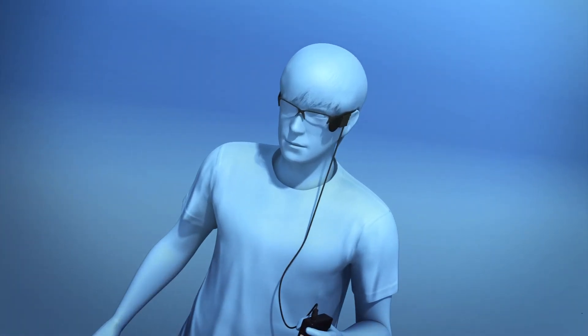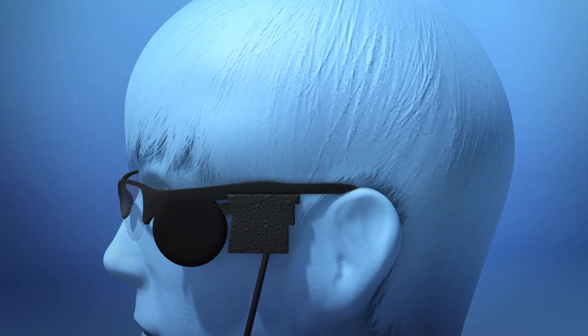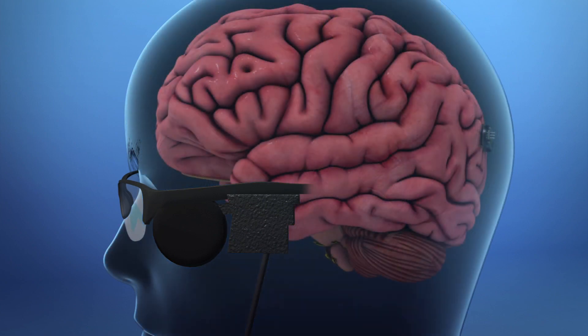According to Second Sight, the company that created the device, the brain implant is put on the surface of the visual cortex, where it will receive deciphered information from the camera wirelessly.